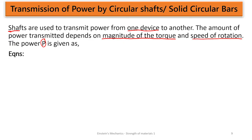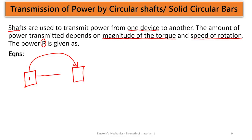For example, let's say I have one device here that is producing power, and another device that needs power. If I want to transmit the power from the first device to the second, one of the ways I can do that is to couple them with a rotating shaft — a circular shaft. As this rotates, it is going to rotate the other part such that the power is transmitted from one place to the other.